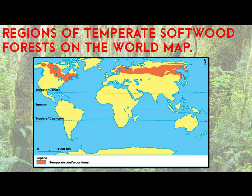Now let's identify the regions of temperate softwood forest on the world map. These forests are also known as coniferous forest. You can see the shading of coniferous forest in orange color — it is horizontally shaded over the Europe and Asia continent, almost at the 50 to 60 degree latitude. You can also see the shading in the northern part of the North America continent.